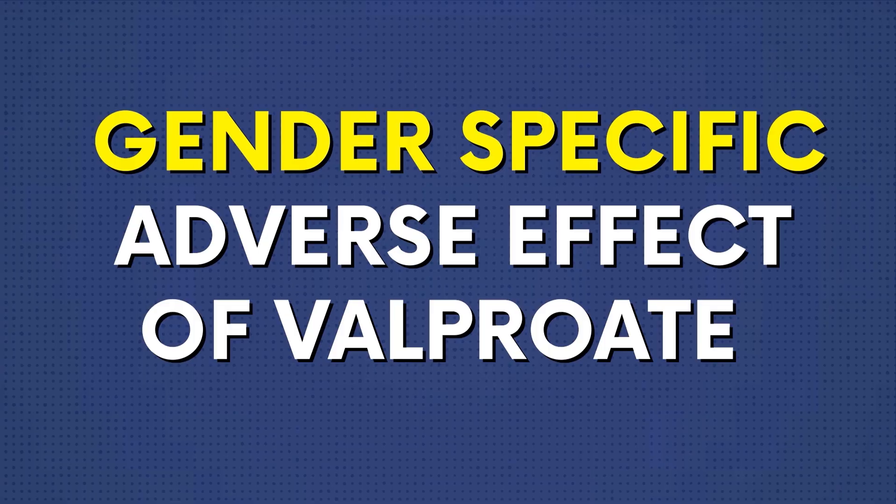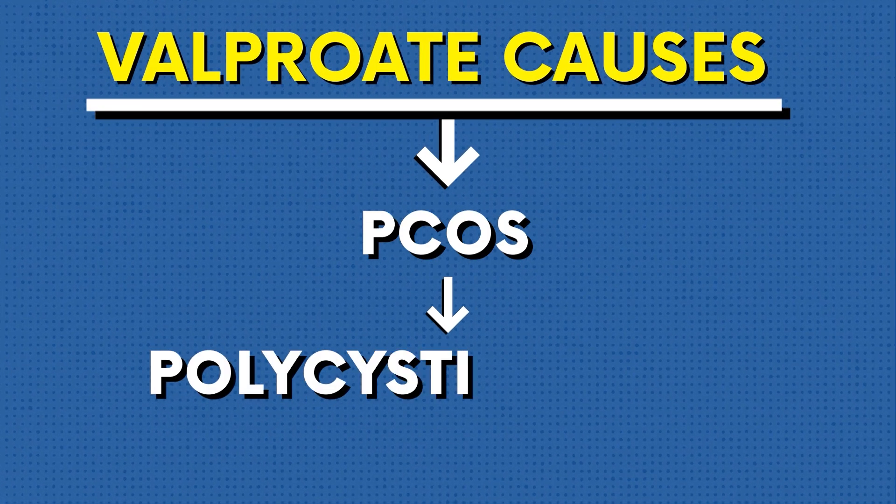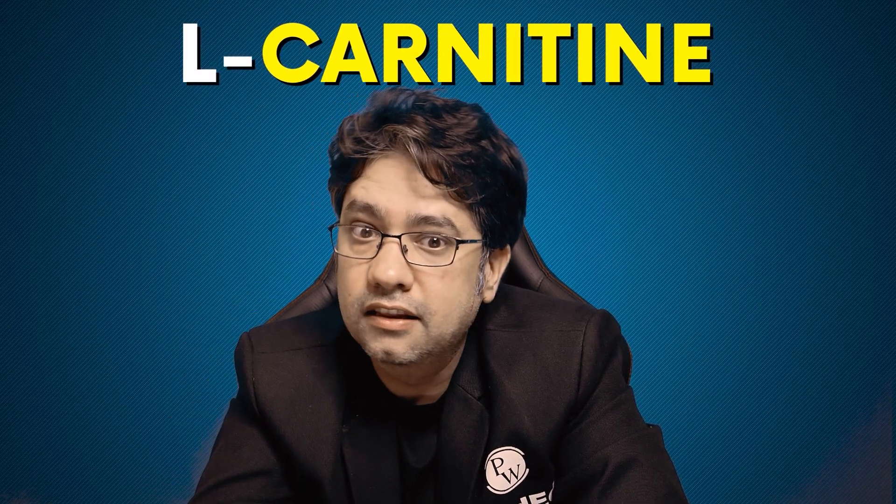In children, Valproate is hepatotoxic — this is a gender-specific adverse effect of Valproate. Valproate also causes PCOS, polycystic ovarian syndrome, which is another gender-specific adverse effect. Valproate increases ammonia level in the brain, and for the treatment of this hyperammonemic encephalopathy, we give the antidote L-carnitine, which removes the excess ammonia generated in the brain.